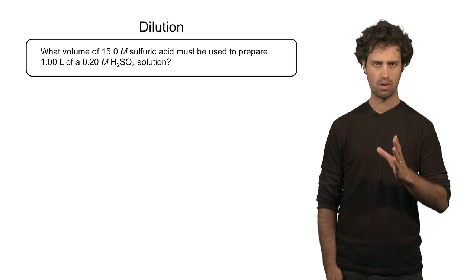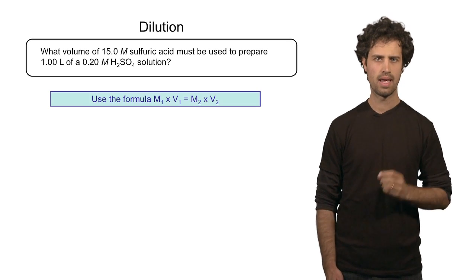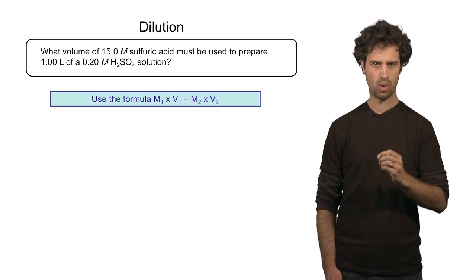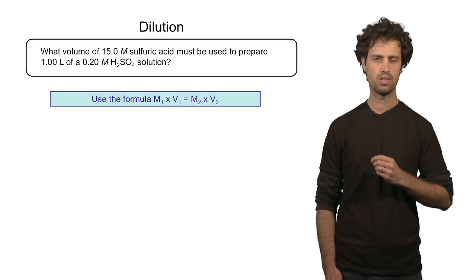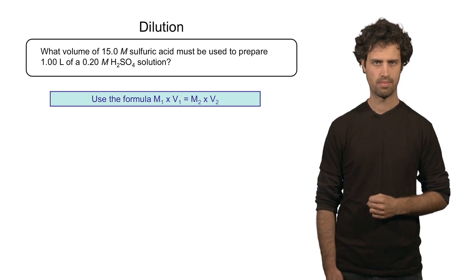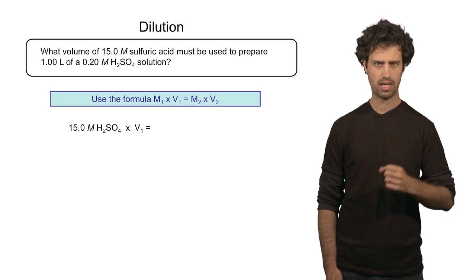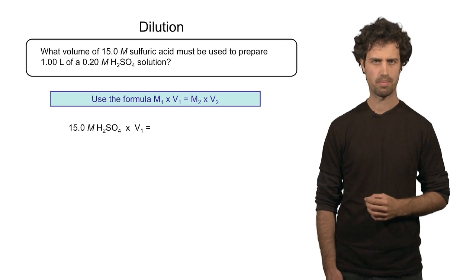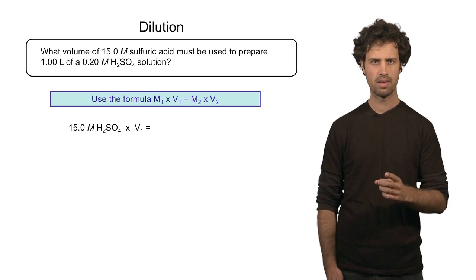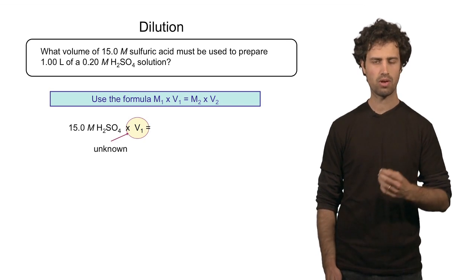For this kind of example we use this formula: M1 times V1 equals M2 times V2. What is M1? M1 is the original concentration of my starting solution, which is 15 molar. What is V1? I don't know that yet. I have to calculate it.